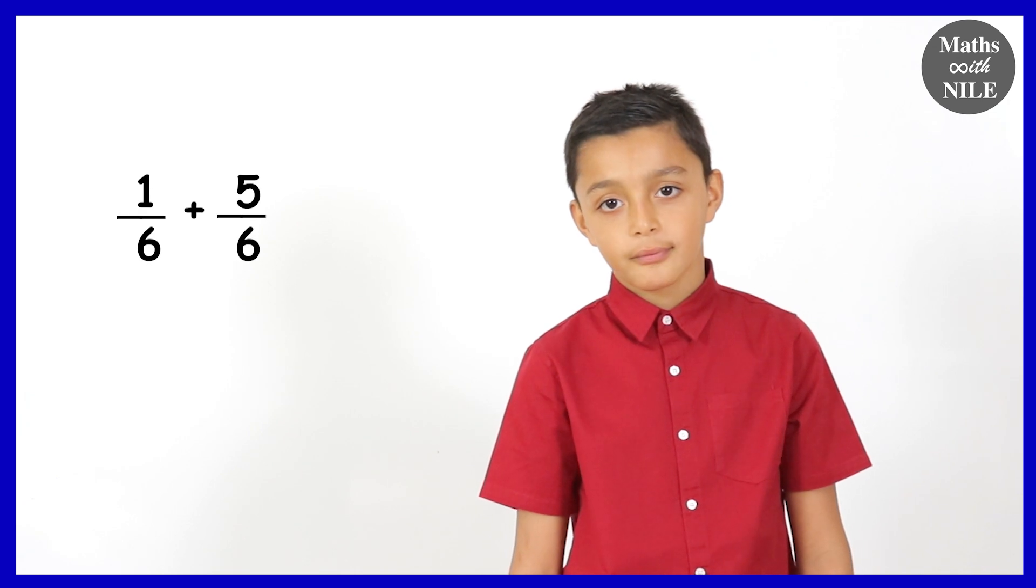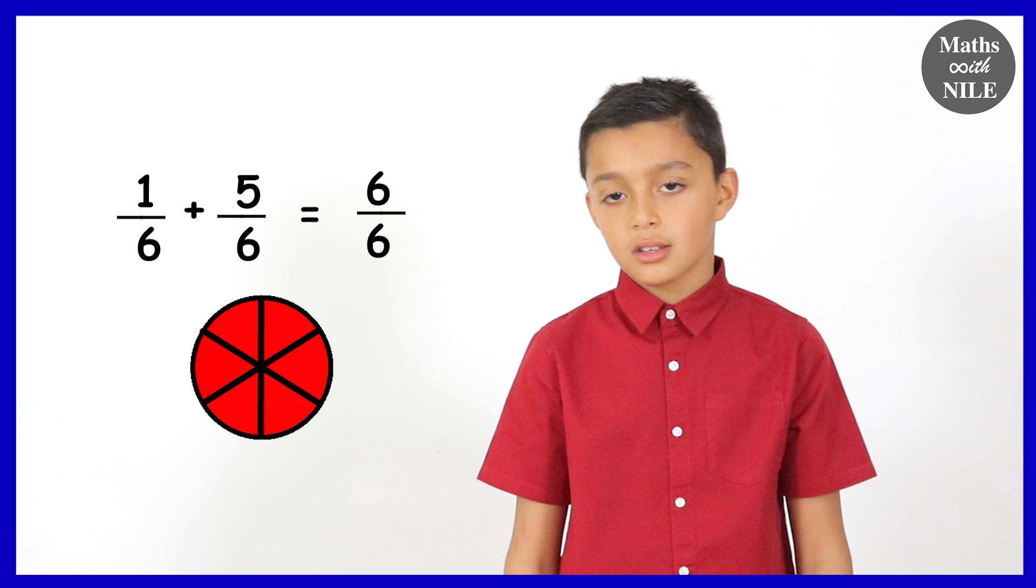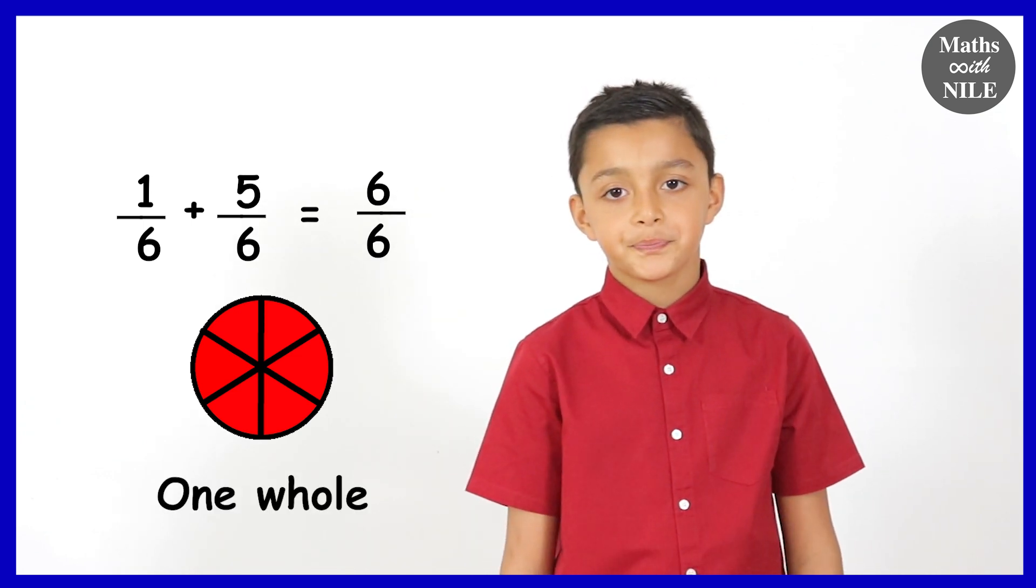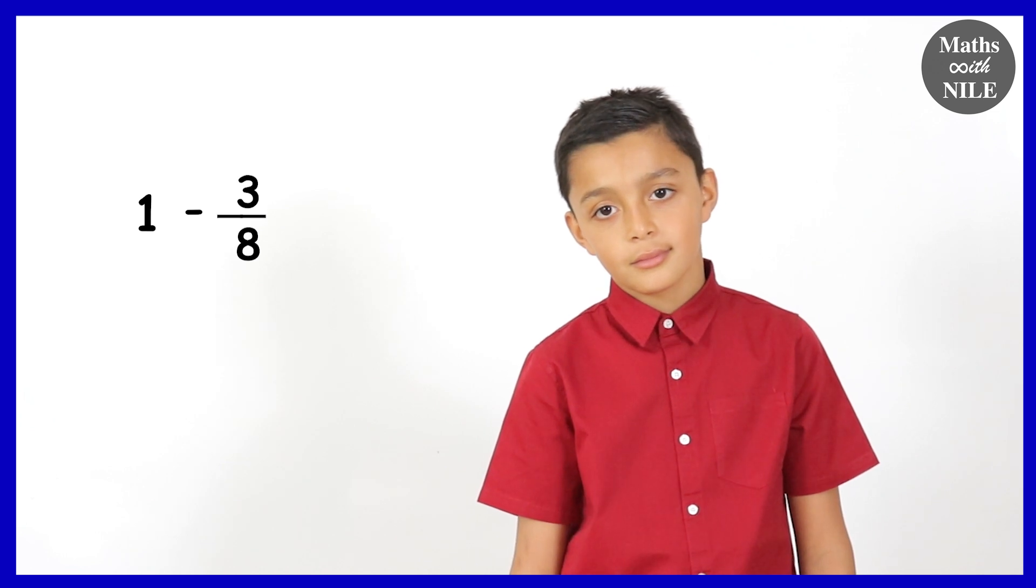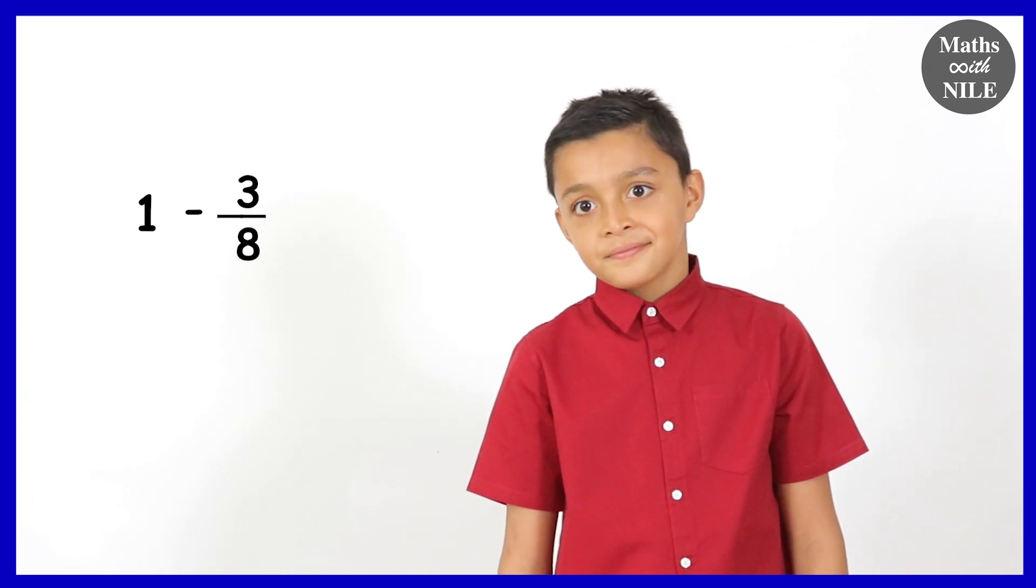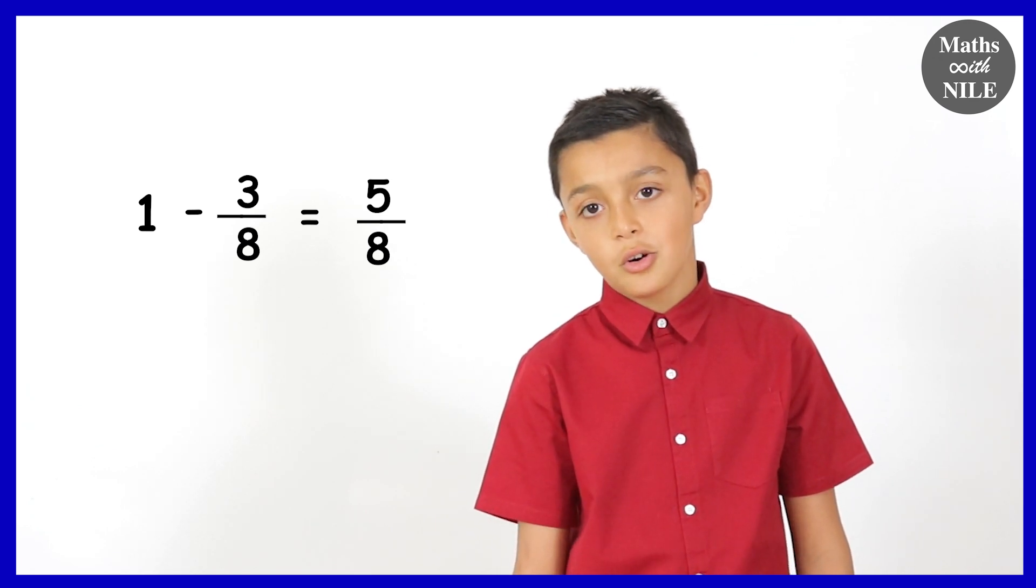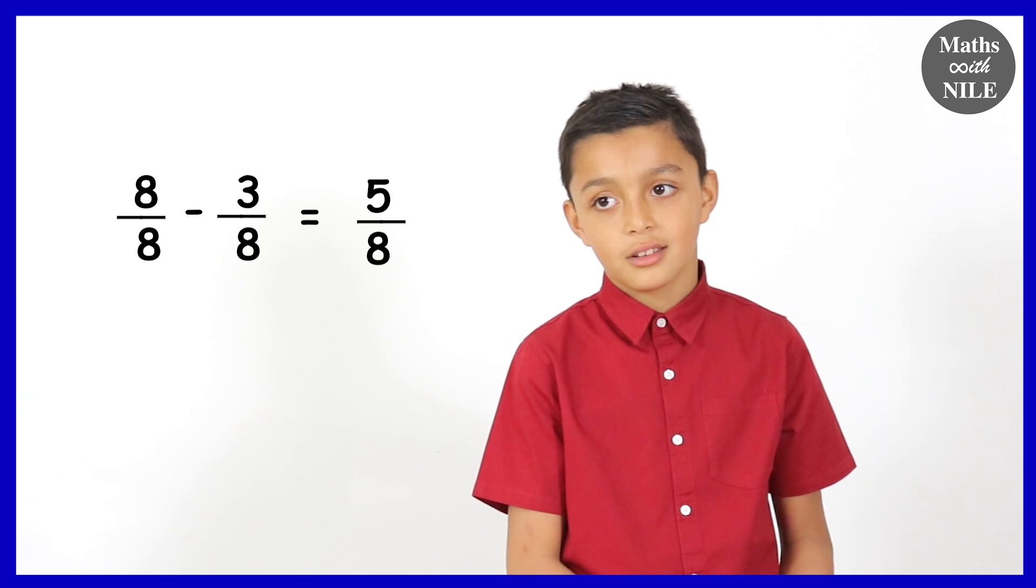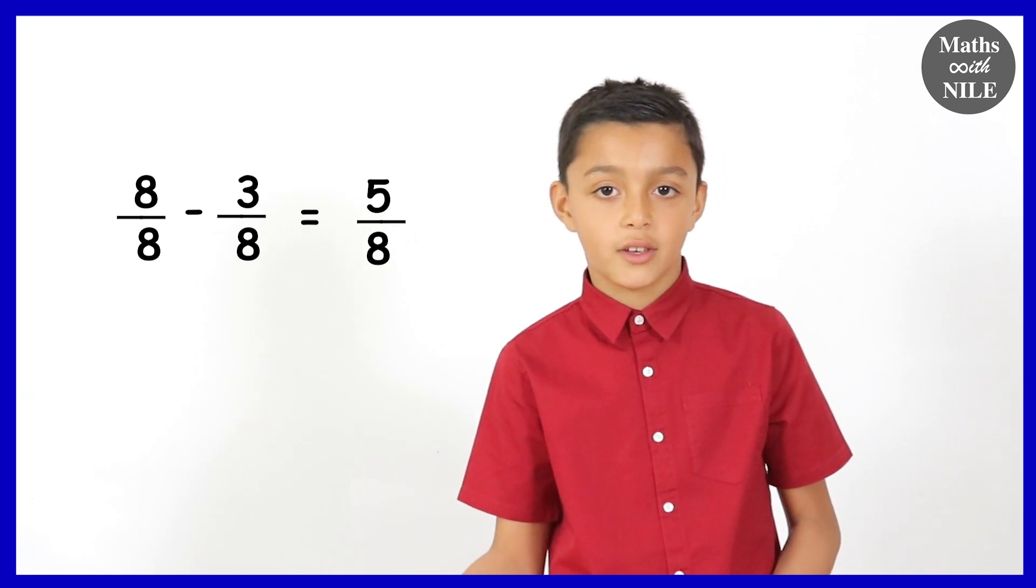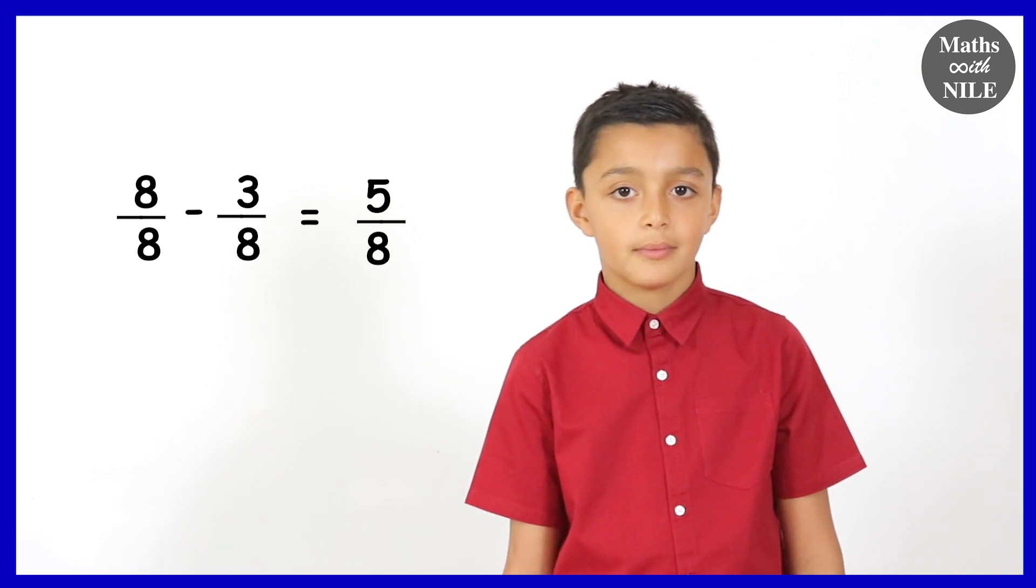One sixth plus five sixths. Six sixths aka one whole. Six sixths which is one whole. Good. So what is one whole take away three eighths? Five eighths. Why is that Niall? Because in a whole you have eight eighths and then eight take away three is five. Five eighths. So eight eighths take away three eighths. You're going to be left with five eighths. Good.